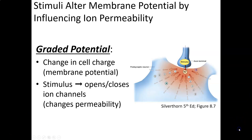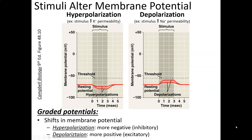Graded potentials can come in two types. If they move in a negative direction, that's called hyperpolarization. The resting membrane potential for nerve or muscle cells — called excitable cells — is normally about minus 70 millivolts. Somatic cells, the normal non-muscle and non-nerve cells, have a resting membrane potential of about minus 5 millivolts, so there's a big difference.